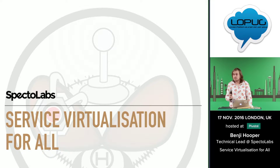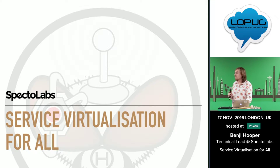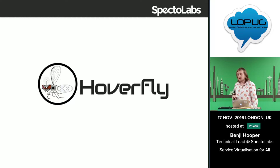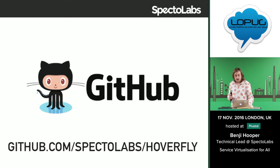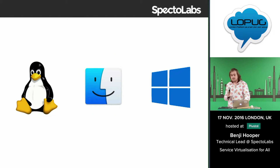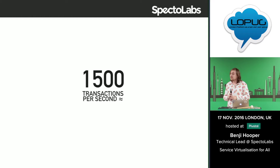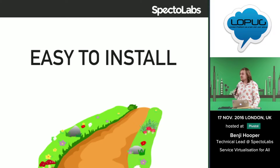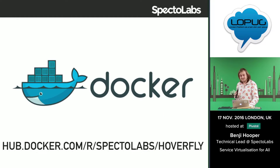My name is Benji and I am a technical lead at Spectre Labs, here to talk about Hoverfly. Hoverfly is an open source project — you can check us out on GitHub. It's written in Golang, so it's cross-platform and quite performant. We get about 1,500 transactions per second, and it's easy to install. All you need to do is put it on your path, and you can check it out on Docker.